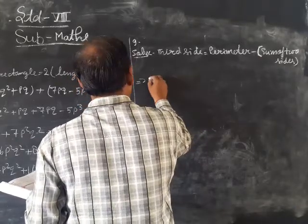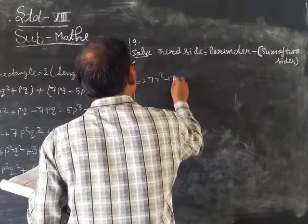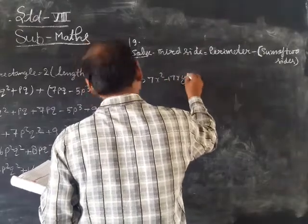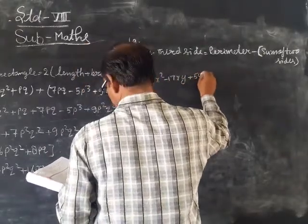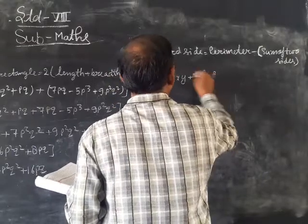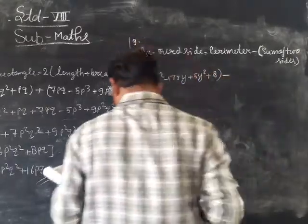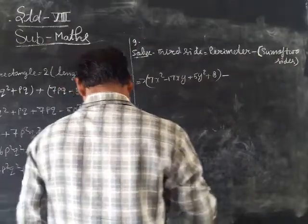Perimeter is 7x² minus 17xy plus 5y² plus 8. We have to find the third side, which is perimeter minus sum of two sides.